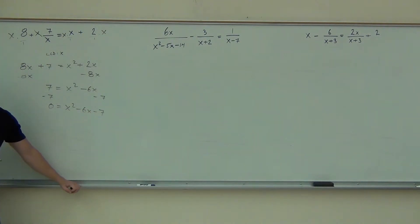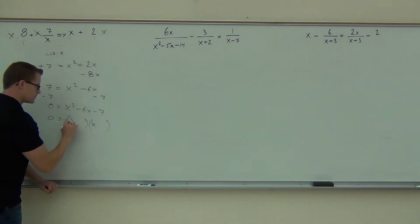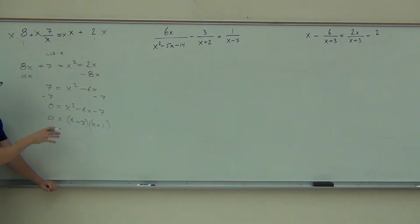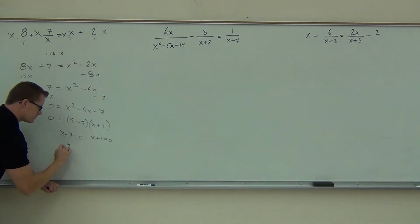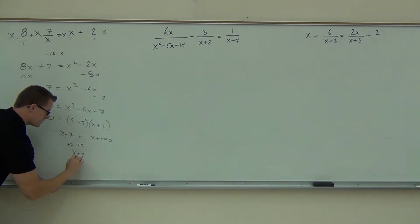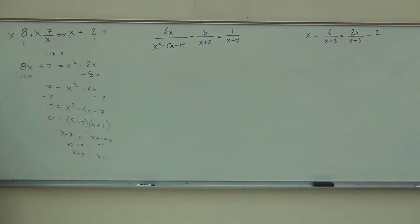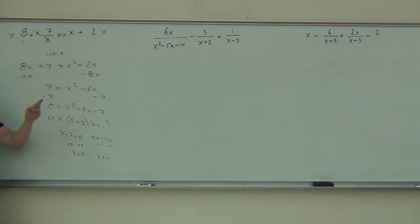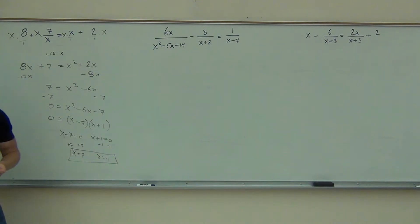Zero equals X squared minus 6X minus 7. We'll factor — minus 7 plus 1. You do have to set them each equal to zero. So X minus 7 equals zero, X plus 1 equals zero. We'll add 7, so X is 7. We'll subtract 1, so X is negative 1. You have to check one thing: make sure these denominators don't make this zero. They don't — they're integers. So we're good, they're both solutions.